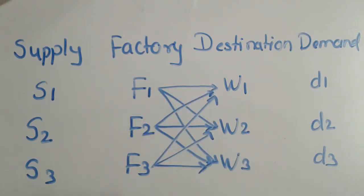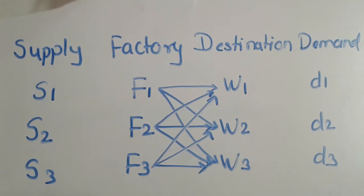The cost of transportation may vary for different combinations. The problem is to determine the quantity to be transported from each factory to each destination in order to minimize the total transportation cost, so that the demand is fulfilled and the supply is utilized.